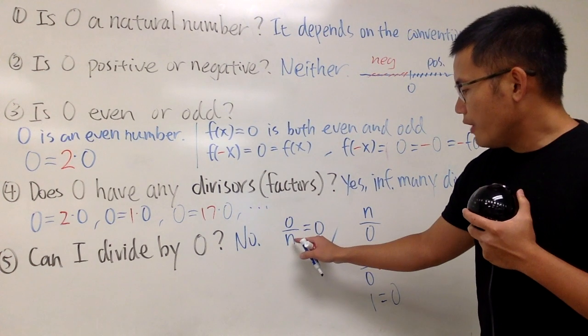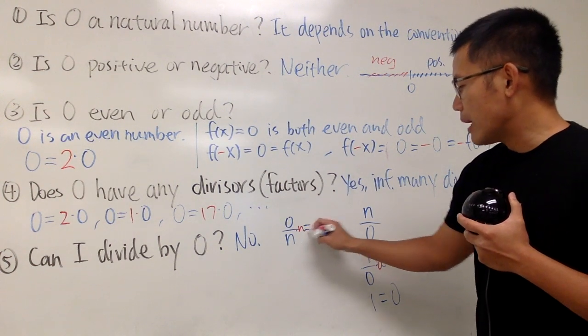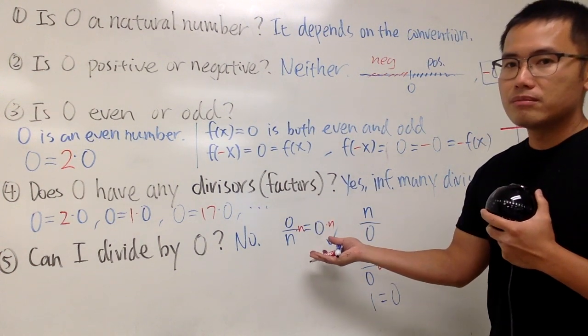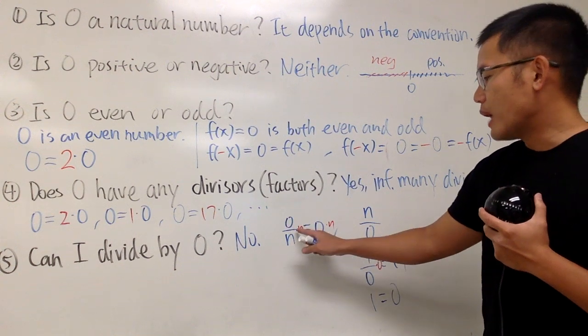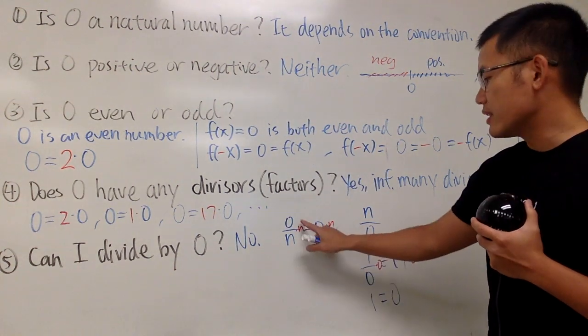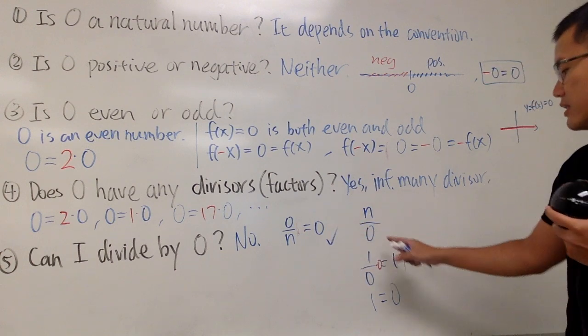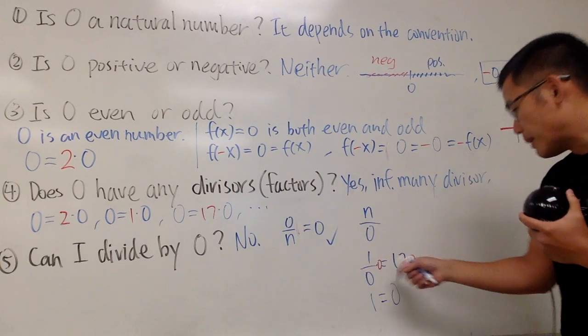This right here, 1 over n is equal to 0. Can we multiply both sides by n and make this legitimate? Yeah, they cancel, and you have 0 is equal to 0. That's really legit. But we cannot do it when 0 is on the bottom.